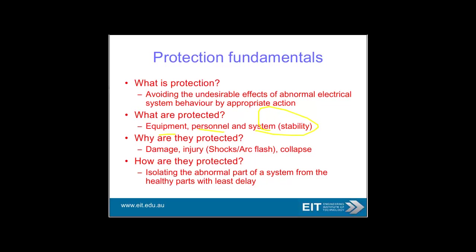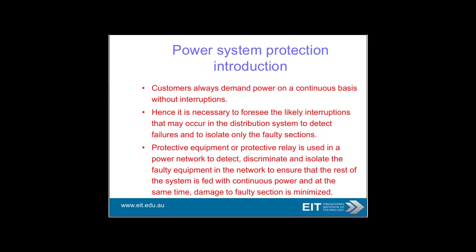Particularly today, with solar power, wind power, and all the dynamics of the power station — coal-based or gas turbine — stability is quite important. The idea is to protect you from shocks, arc flash, and collapse in the electrical power supply. The idea is to split off the unhealthy part of the system that's had a problem — a fault — from the healthy part as quickly as possible without causing any further disruption to your power supply. The protective relay is used to detect, discriminate, and isolate the faulty equipment.